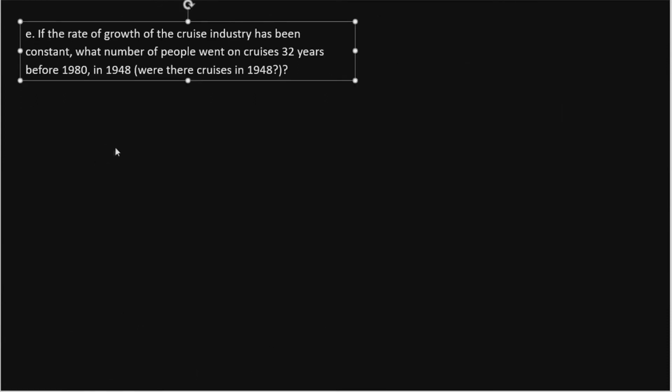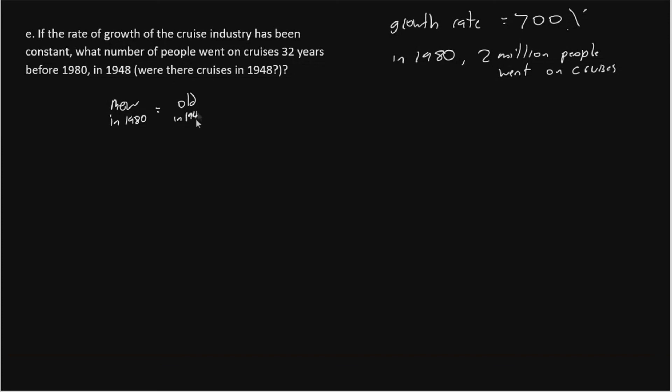Alright. If the rate of growth of the cruise industry has been constant, what number of people went on cruises 32 years before 1980? That is, in 1948. So remember that our growth rate was 700% previously. That's from part C and D. We also saw that our people on cruises in 1980, we had 2 million. So let's use that information and reset the problem we did in part D and try again. Now we're going to treat our newer value as being the value from 1980, and the older value being the value in 1948. And then we still say times 1 plus percent over 100.